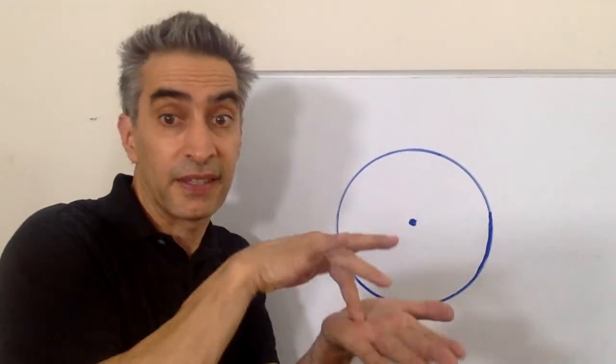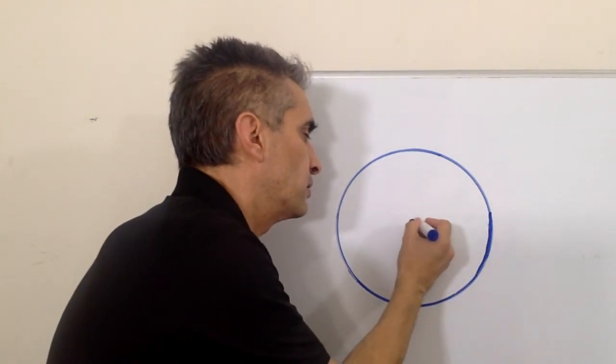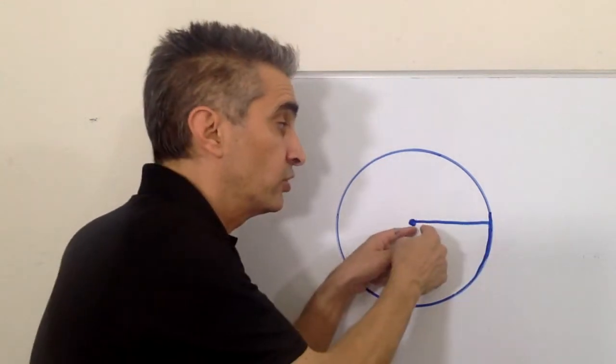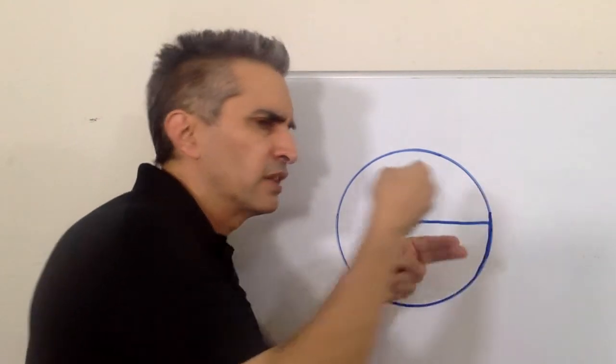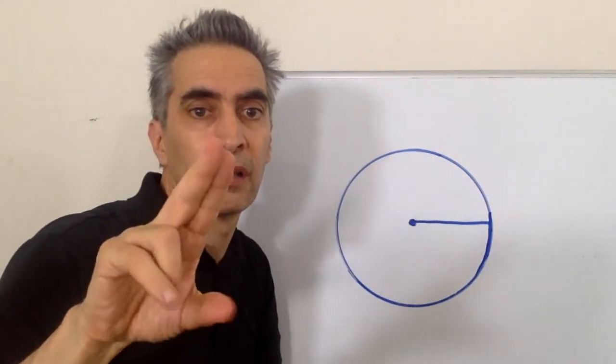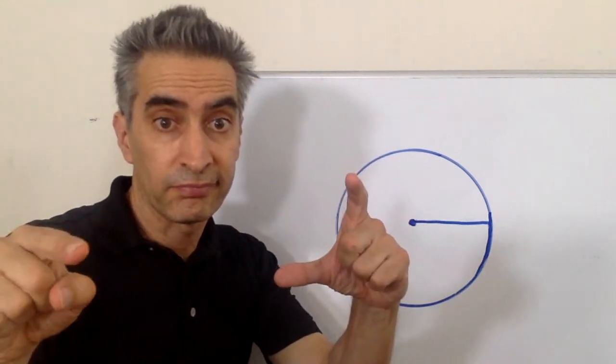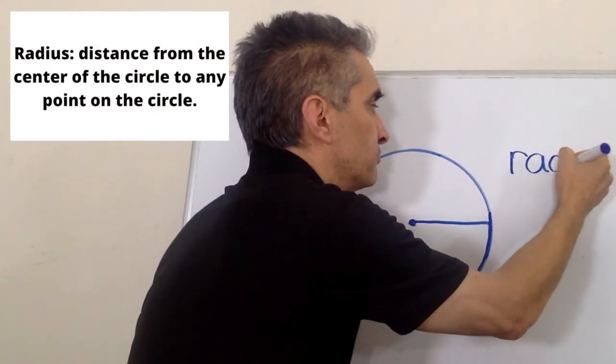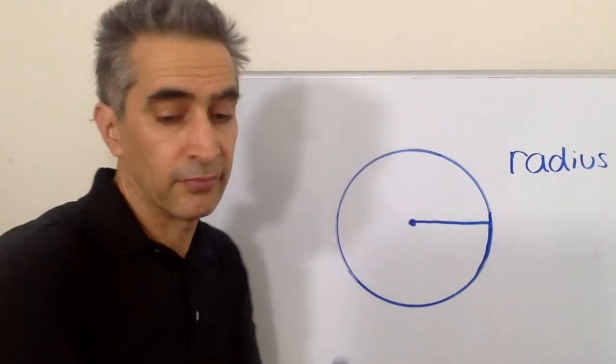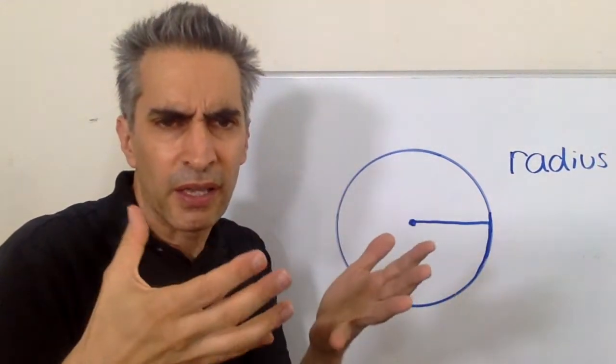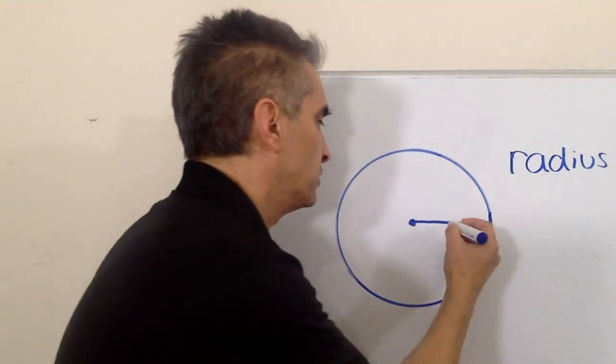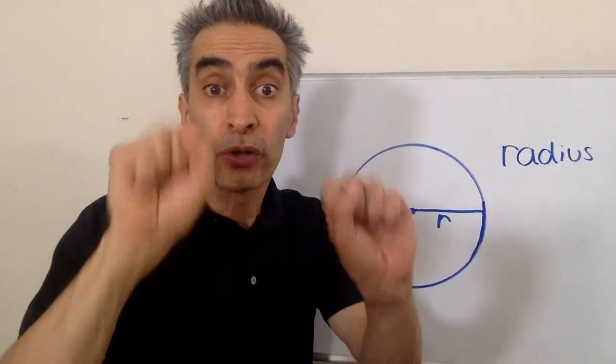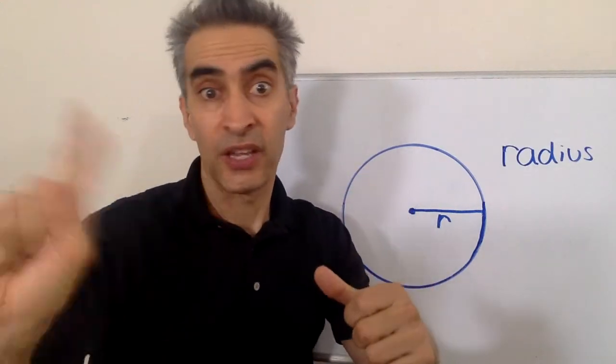This is the center. And the distance this line forms is called the radius. The math symbol for radius is an R. You can draw a radius anywhere you want.